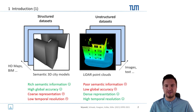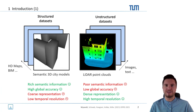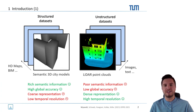On the other hand, we also have an influx of unstructured datasets — be it LiDAR point clouds, images, or even text. Those are characterized by poor semantic information and rather low global accuracy, so generally they have contradicting characteristics compared to structured datasets.